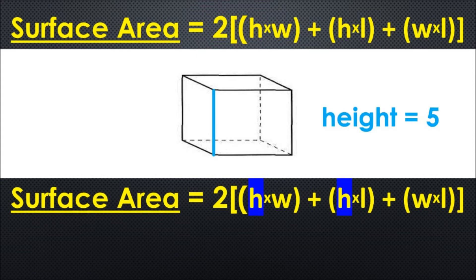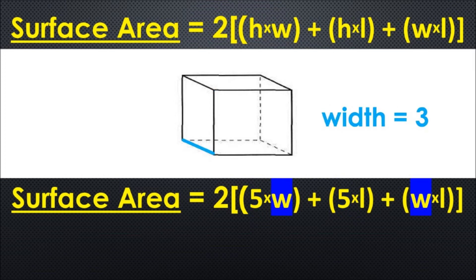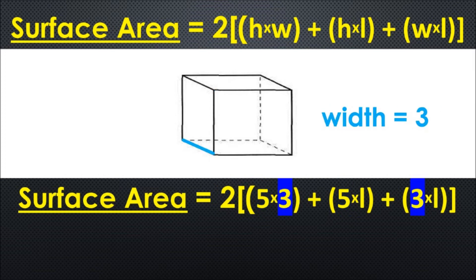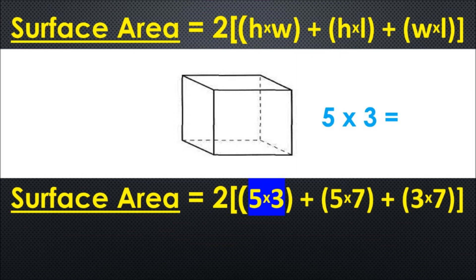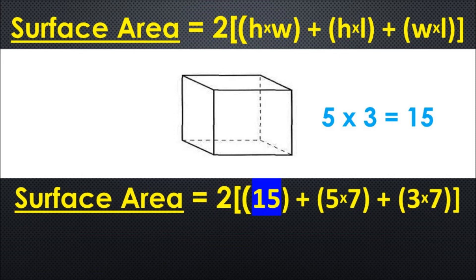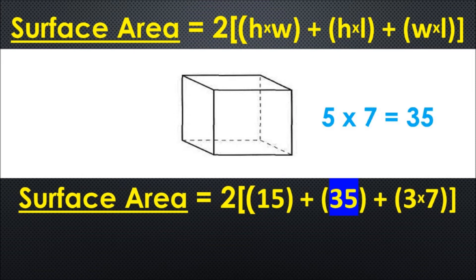Plug in 5 for the height. Plug in 3 for the width. Plug in 7 for the length. 5 times 3 is 15. 5 times 7 is 35. 3 times 7 is 21.